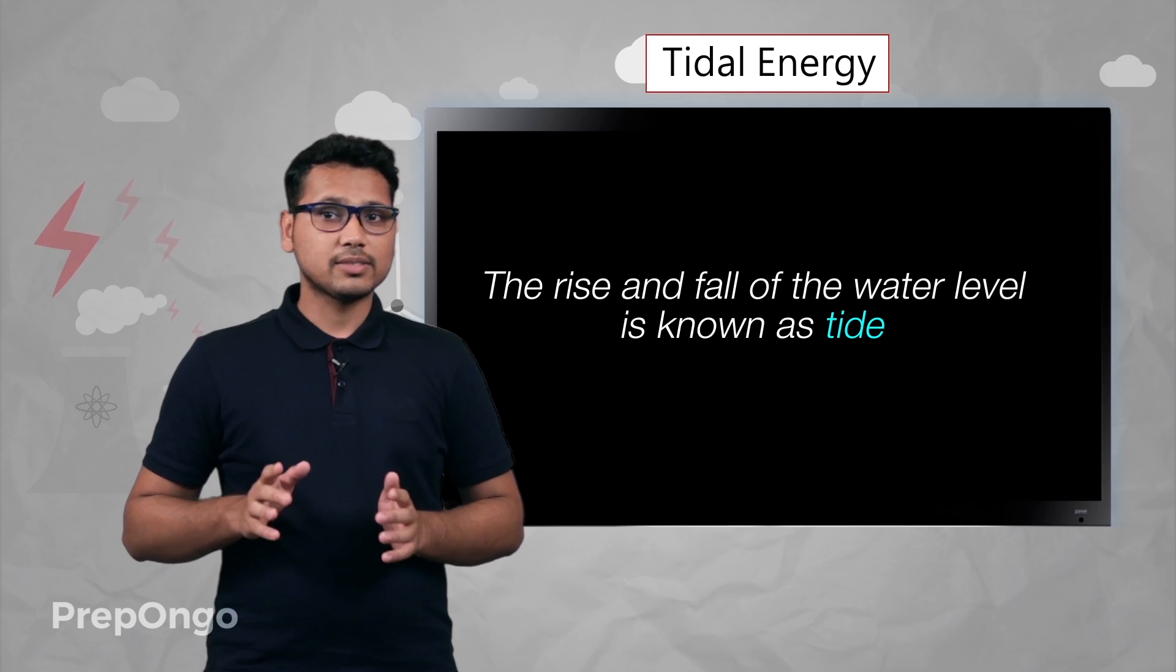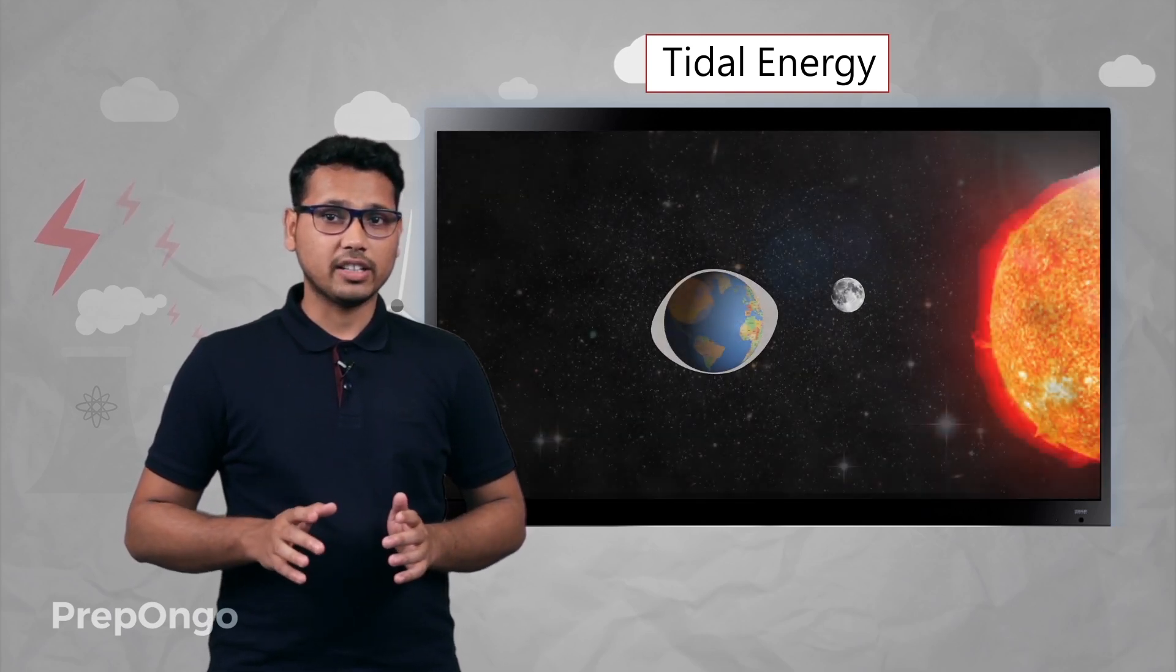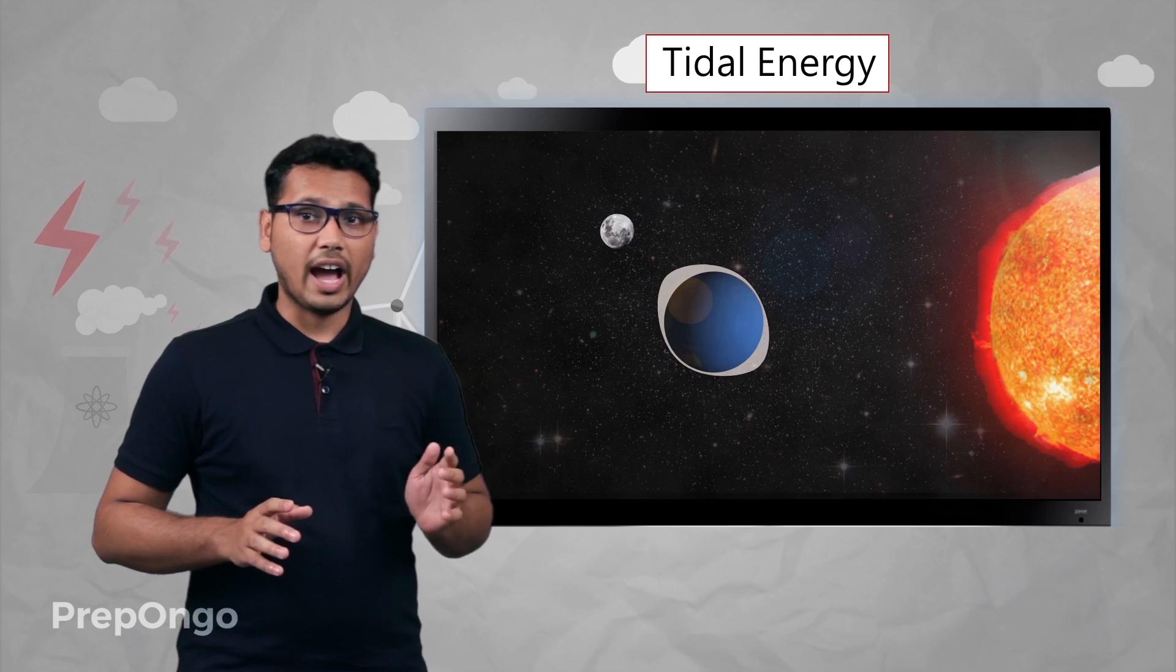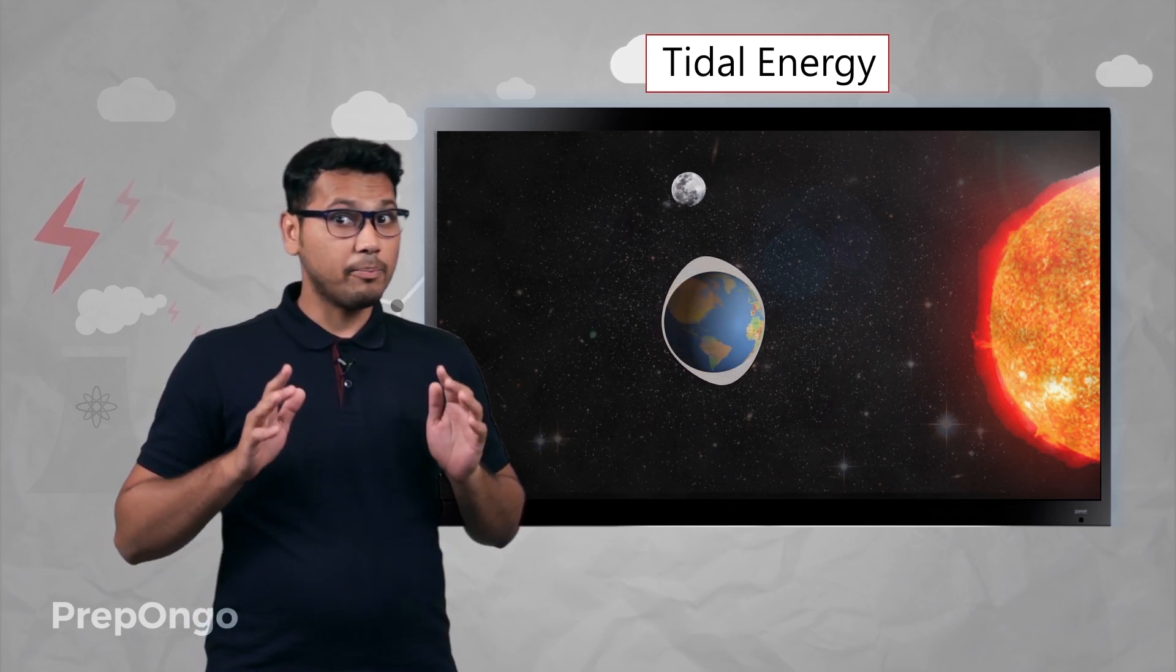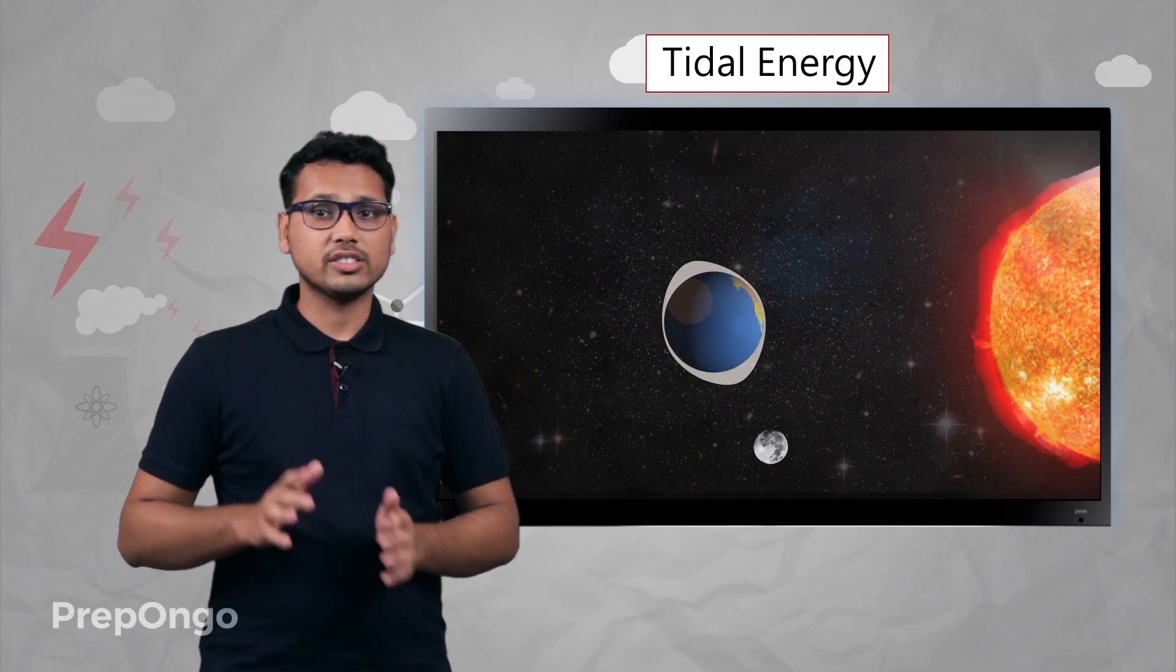Tides are basically caused by the gravitational pull of the sun, moon, and the rotation of the earth. Their combined effect causes the tides.